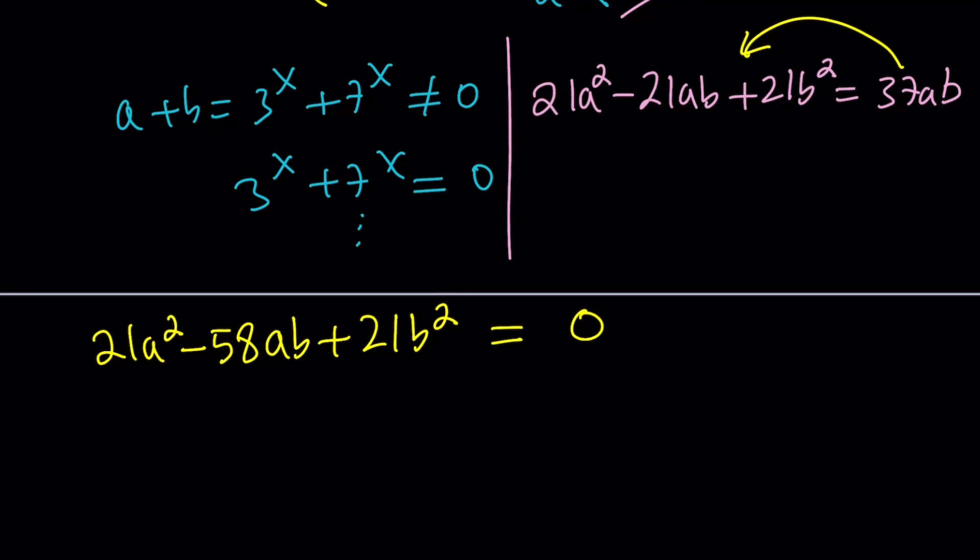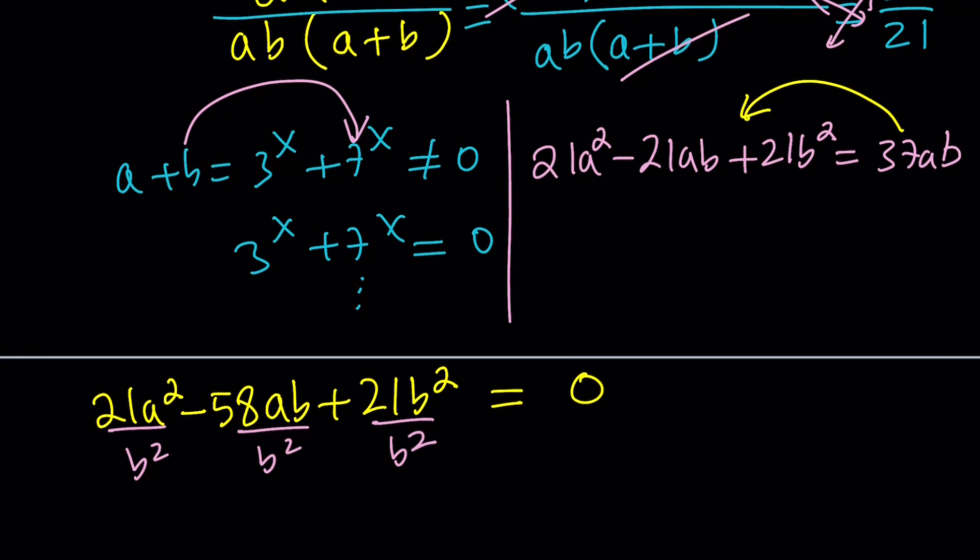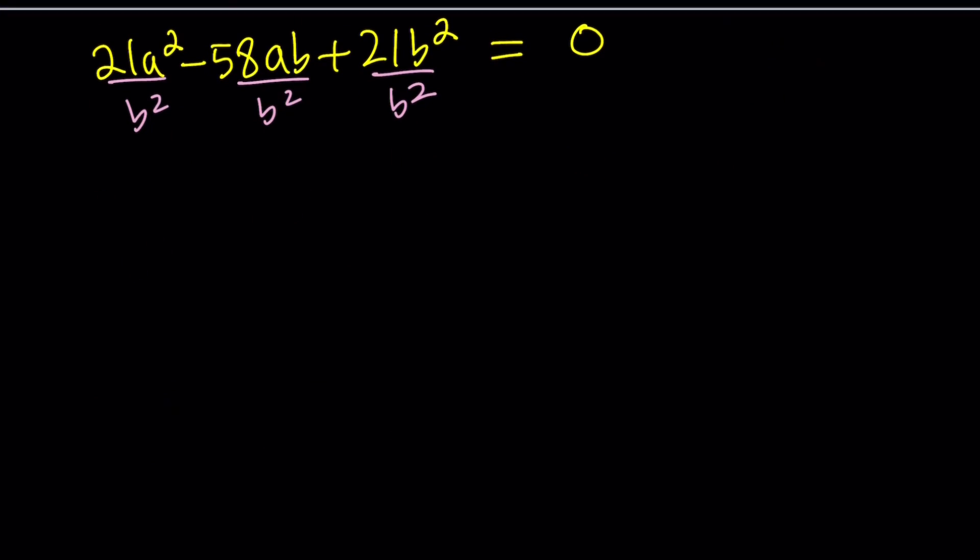How do you solve a quadratic like this? It's a little tricky. One way is using the quadratic formula, but there are two variables. One thing that's cool is we can turn this into a single variable because it's a homogeneous equation. We can divide everything by b^2.